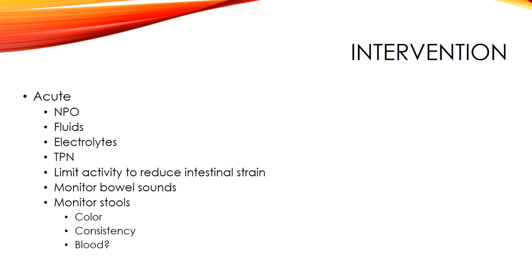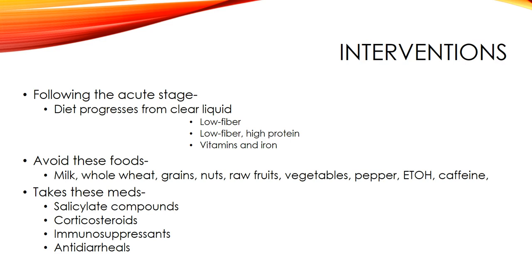Interventions for acute Crohn's are similar to colitis: NPO, fluids, electrolytes, TPN, limit activity to reduce intestinal strain, monitor bowel sounds, and monitor stools for color, consistency, and blood. Following the acute stage, diet progresses from NPO to clear liquids, low fiber, low fiber with high protein, and then vitamins and iron. Avoid milk, whole wheat, grains, nuts, raw fruits, vegetables, peppers, alcohol, and caffeine. Medications include salicylate compounds, corticosteroids, immunosuppressants, and antidiarrheals.